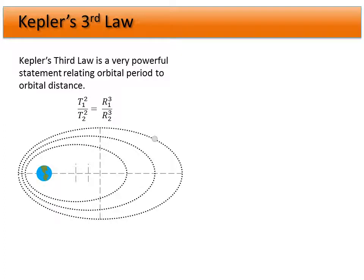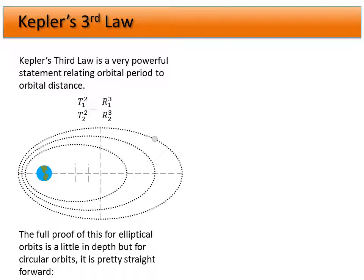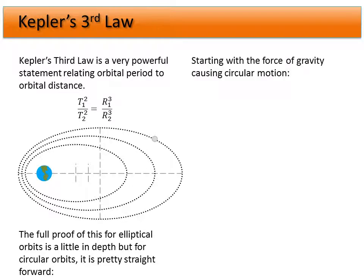We can have different orbits with different orbital distances. The semi-major axis goes from the center to the edge of the orbit. The orbital period is the amount of time it takes to complete one full cycle. This is straightforward for circular orbits, and similar — though less simple — for elliptical orbits. We'll focus on the circular orbit version.